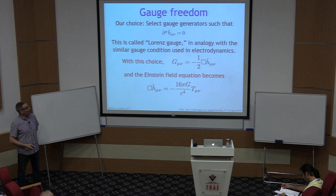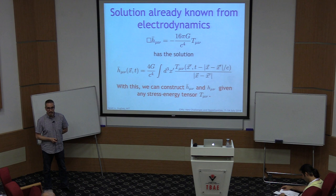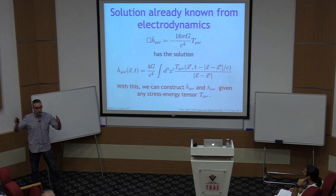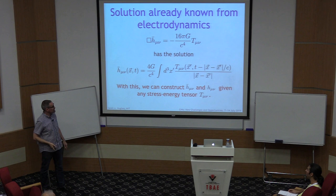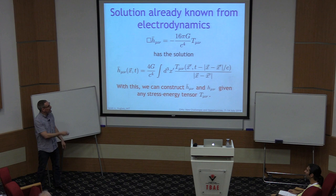We've already solved this equation — we did it the way any smart physicist would: we looked it up in a book. Using the radiative Green's function, we can write down the solution and say: given a particular source with stress-energy tensor T-mu-nu, here is the perturbation to spacetime that arises from it. You give me a T-mu-nu, lock me in a closet with a pot of tea and a sharp pencil, and I'll come out with the H-mu-nu that characterizes it.